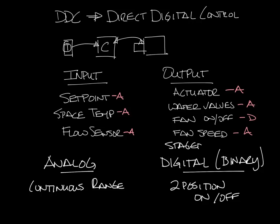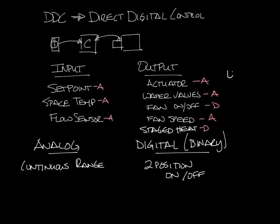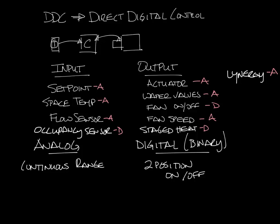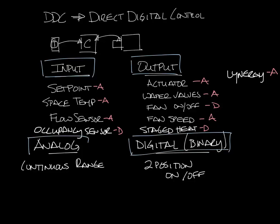Some more examples: stages of electric heat would be digital outputs — you would turn each stage on and off — but proportional heat like our Linergy heater would be an analog output. On the input side, an occupancy sensor would be a digital input to the controller; it would indicate whether the space is occupied, yes or no. That's just a few of the inputs and outputs, both digital and analog, that you can have on a VAV box.